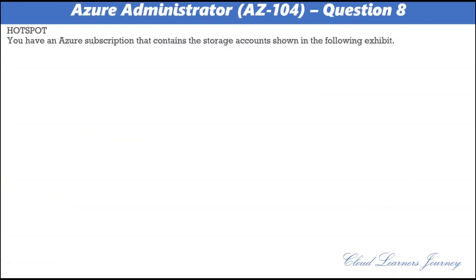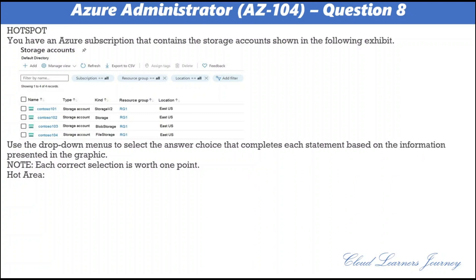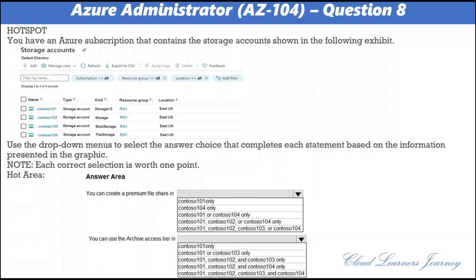Question number eight. You have an Azure subscription that contains storage accounts: Contoso101 (StorageV2, RG1, East US), Contoso102, Contoso103, and Contoso104. Using the drop-down menus: you can create a premium file share in Contoso104 only — premium file shares are hosted in a special-purpose storage account kind called File Storage. For the second statement, you can use the archive access tier in Contoso101, Contoso102, and Contoso103 only.